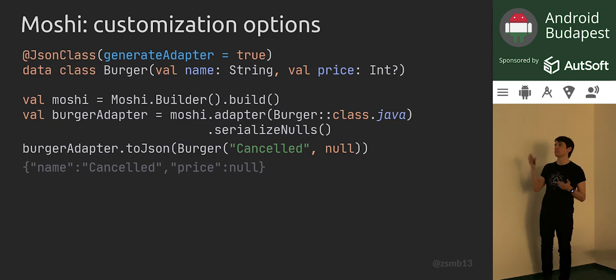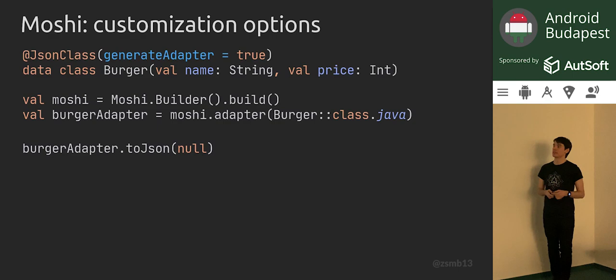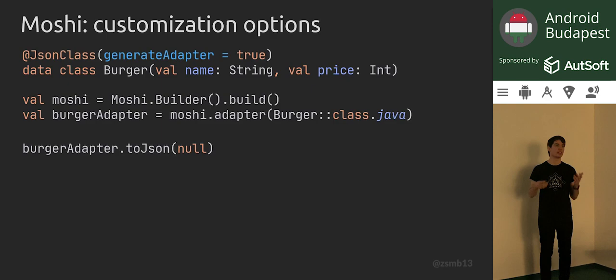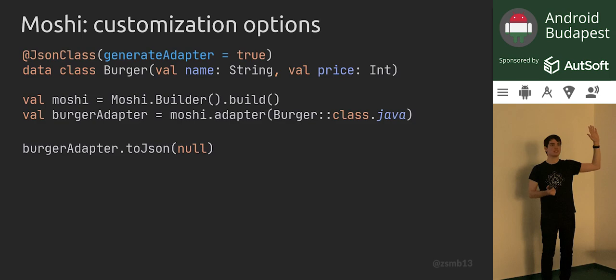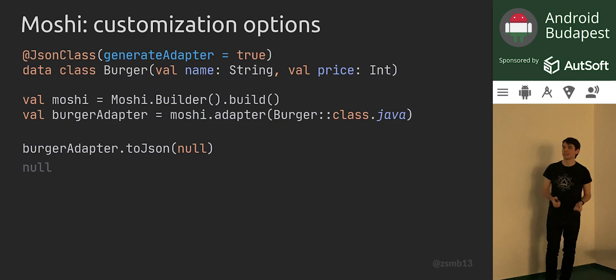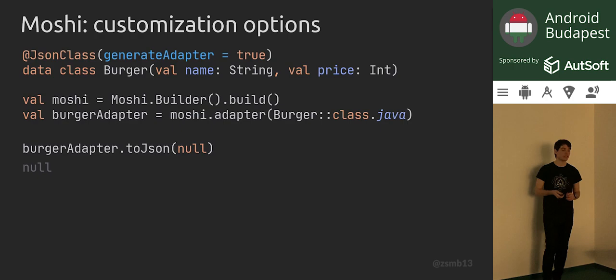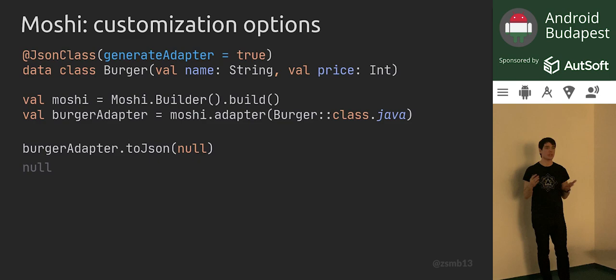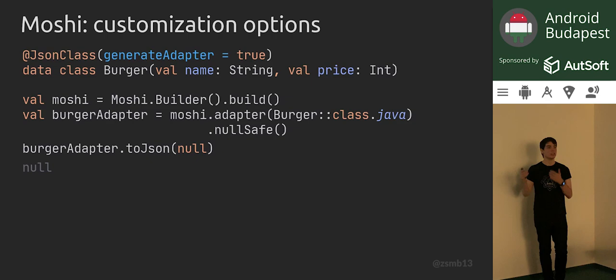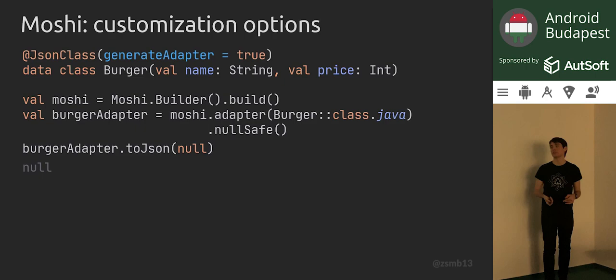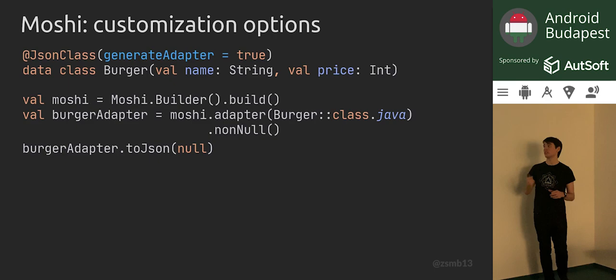This wrapping of adapters pattern is what Moshi is all about for customization. For example, if our entire burger would be null and you have a custom adapter that didn't handle nulls, you can wrap any adapter with the nullSafe call, which will map nulls to nulls and otherwise call into your custom code. If you want to prevent serializing null values, you can call nonNull, which is another wrapper around the original adapter, and this will crash with a Moshi exception if a null value is encountered.